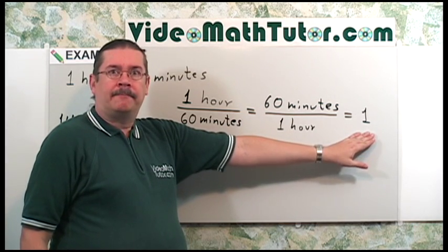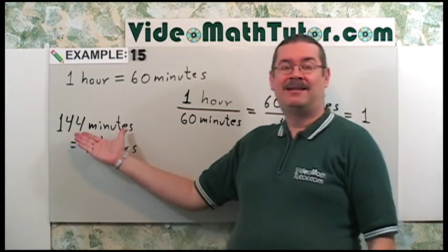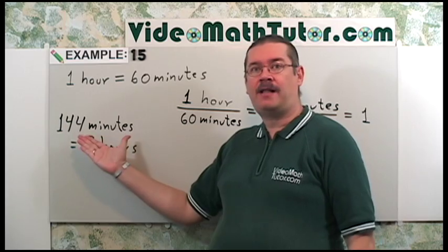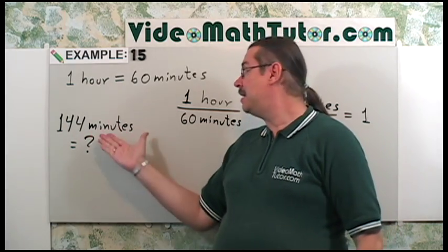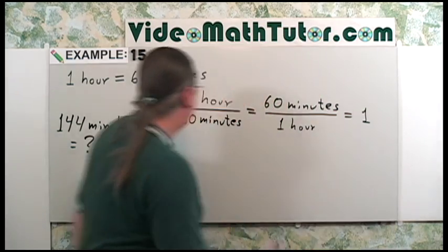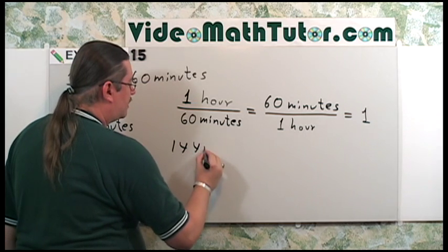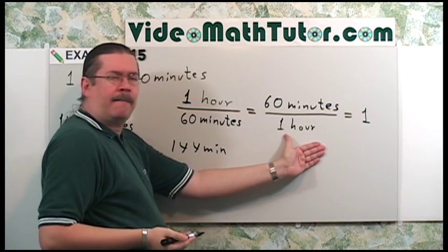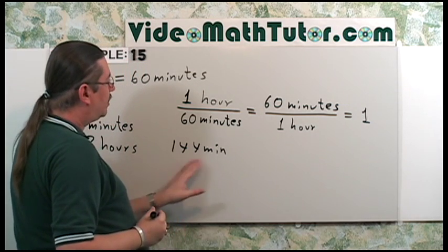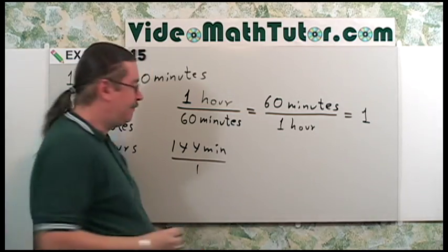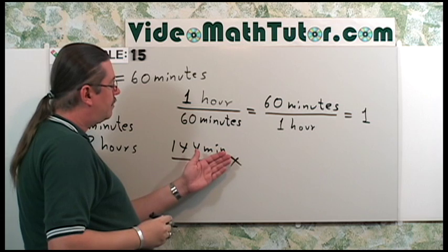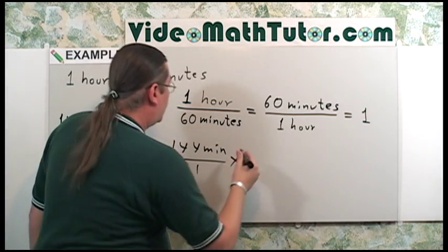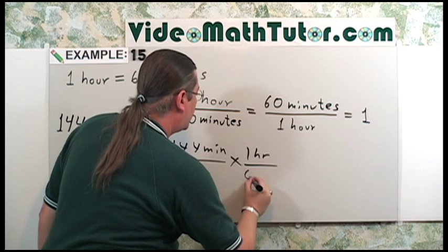Now, why do I want one? One times any value is that value. So multiplying 144 minutes by one doesn't really change this value. I want to change its appearance. Get rid of the minutes, get hours. So to do that, I'm going to start off with the 144 minutes and I want to multiply that by one of these two fractions. Which one? Well, a whole number times a fraction, I better put that over one. In this case, if you notice, minutes are in a numerator. So I want to multiply it by the one with minutes in the denominator right here. So I get one hour divided by 60 minutes.